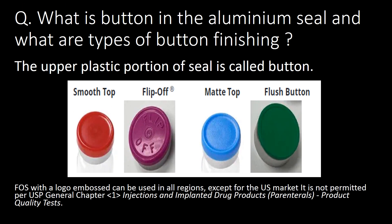What is the button in an aluminum seal, and what are the types of buttons? The upper plastic portion of the seal is called the button. Various types of buttons are: smooth top, flip top, matte top, and flush bottom. The FOOS (flip-up seal with logo embossed) can be used in all regions except the US market, as it is not permitted as per USP chapter number 1.